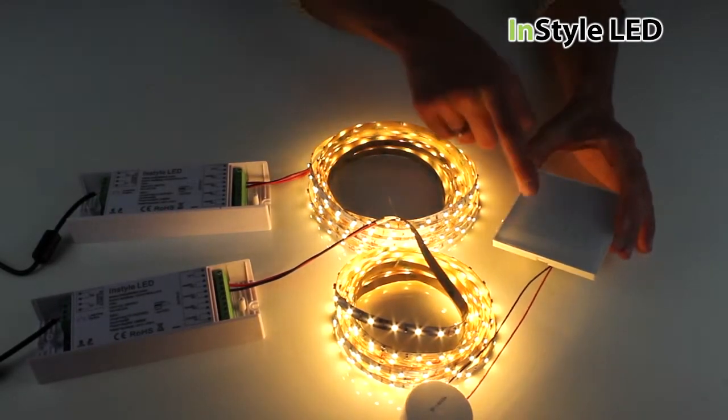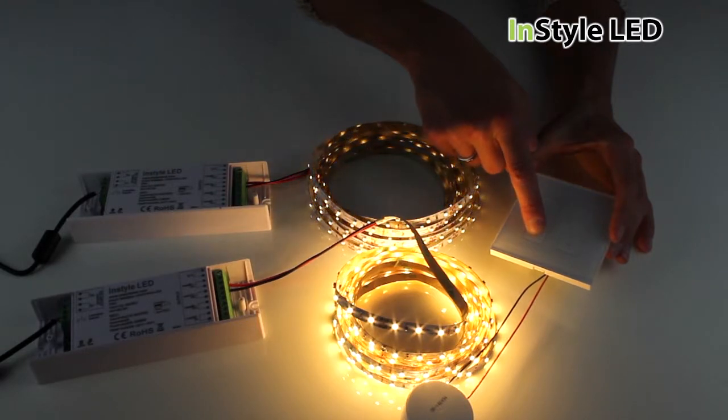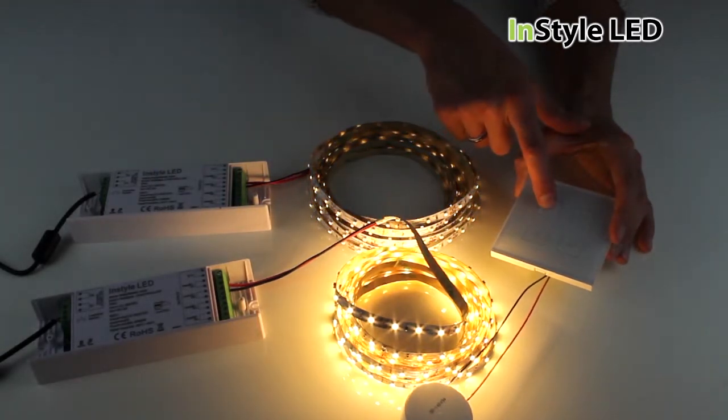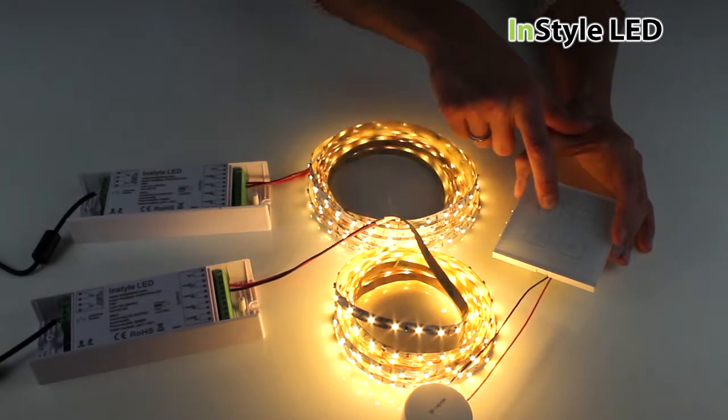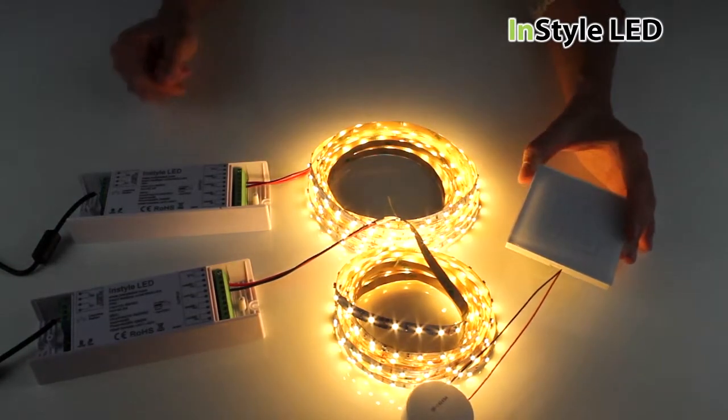You should now be paired and be able to fully dim two separate zones from the one wall controller. The wall controller can fit into a standard single gang back box and will work up to 20 meters away from the receivers.